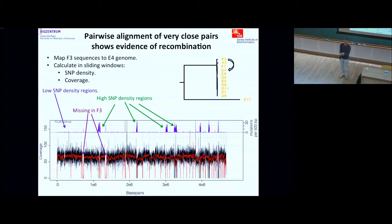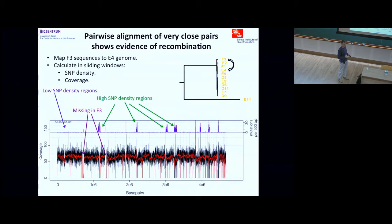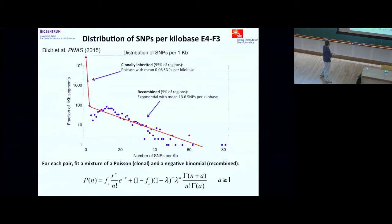We're convinced these blocks are regions where horizontal recombination took place. These guys are very close — they had a recent common ancestor — but since diverging there have been events where a piece of DNA from another E. coli was inserted through homologous recombination. Whereas in most of the genome the mutation rate is very low, in these regions it's like 1–2%, which is the typical distance between randomly chosen E. coli. So they're everywhere very close except for a few regions that are as distant as random E. coli.